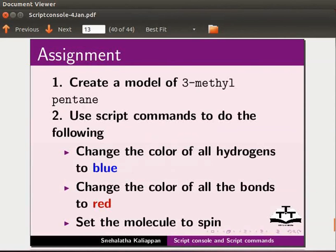As an assignment, create a model of 3-methylpentane. Use script commands to do the following: change the color of all the hydrogens to blue, change the color of all the bonds to red, and set the molecule to spin.